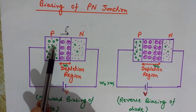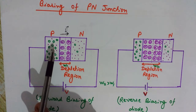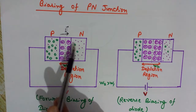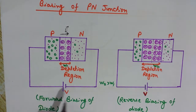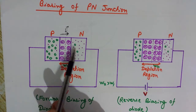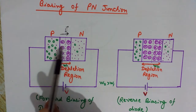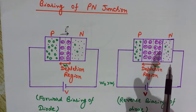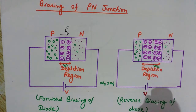Electrons are in majority on the N side and holes are in minority, while on the P side holes are in majority and electrons are in minority. In forward biasing, some holes move into the junction region and electrons are attracted towards it, so the depletion layer width decreases. The opposite happens in reverse biasing.